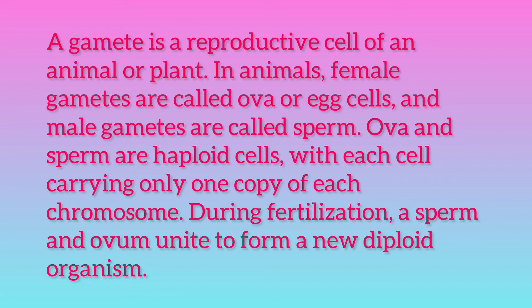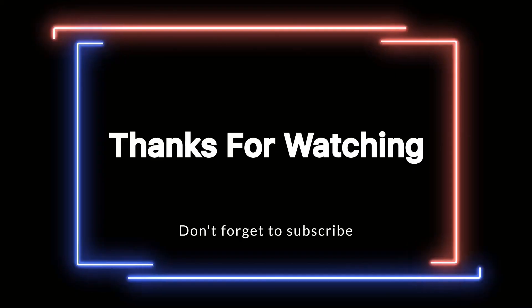Oogenesis is the process of female gamete formation in animals. This process involves meiosis occurring in the diploid primary oocyte to produce the haploid ovum. Spermatogenesis is the process of male gamete formation in animals. This process also involves meiosis occurring in the diploid primary spermatocyte to produce the haploid spermatozoon.